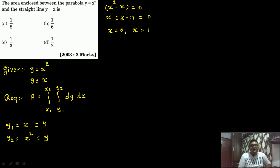So x is equal to either 0 or x is equal to 1. So these are our two x values and two y values. Now we will put them up. So area is equal to integration from 0 to 1, again integration from y1 to y2, means x to x square.